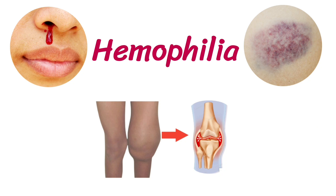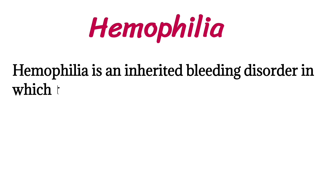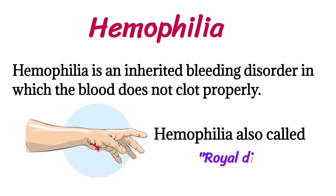Hi students, today's lecture is on a very interesting topic: Haemophilia. Haemophilia is an inherited bleeding disorder in which the blood does not clot properly. Haemophilia is also called the royal disease.